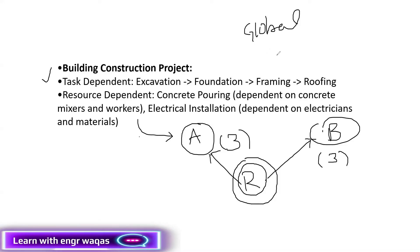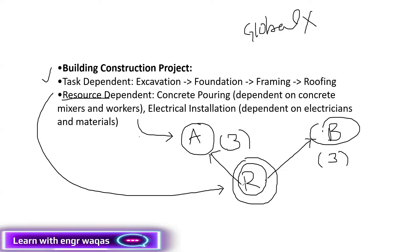But when it comes to resource dependent activities, Primavera P6 is not going to consider the global calendar. Primavera P6 is going to consider the resource calendar — that resource which is deployed on that certain activity. So Primavera P6 is going to consider the week of three days.